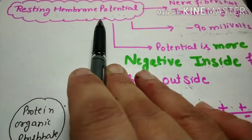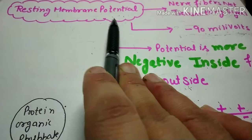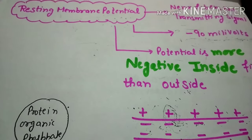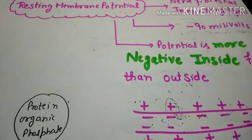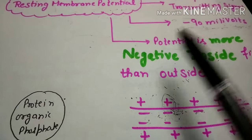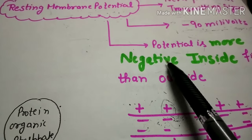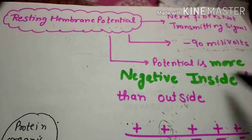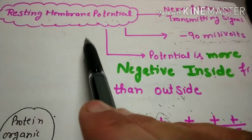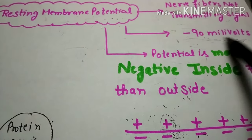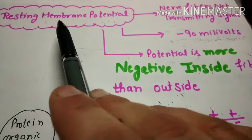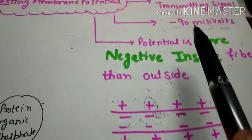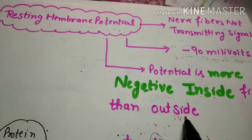Resting membrane potential is required for the normal functioning of the neuron. Resting membrane potential means nerve fibers are not transmitting any signal at this time. For a long nerve fiber, this resting membrane potential is minus 90 millivolts. The potential is more negative inside the fiber than the outside. We will discuss how this minus 90 millivolts originates and what factors contribute to it.